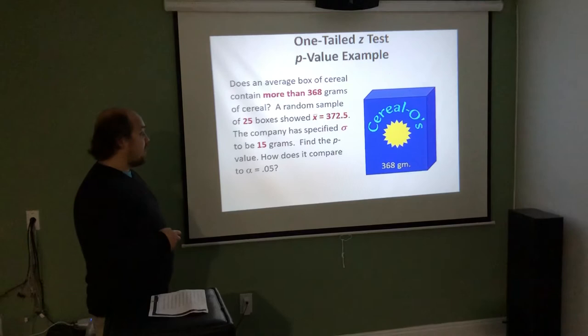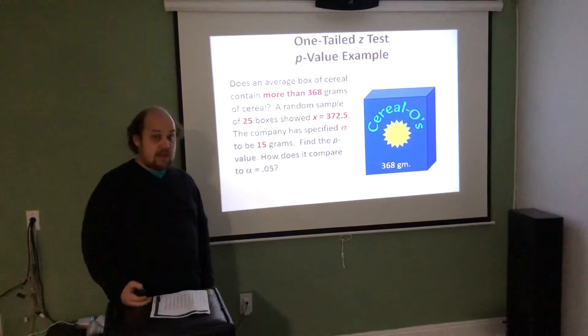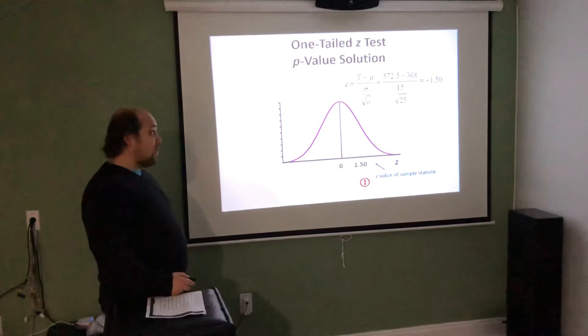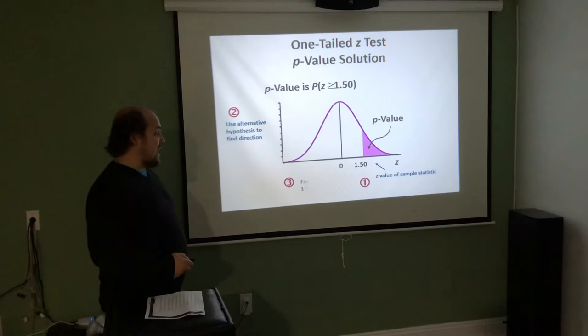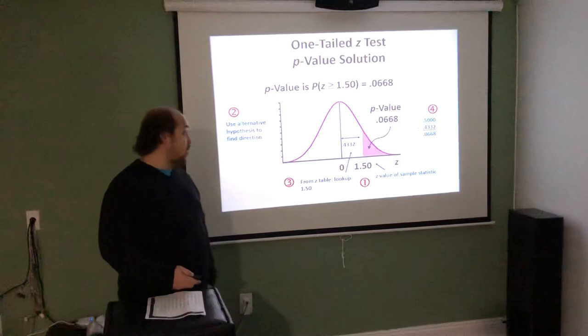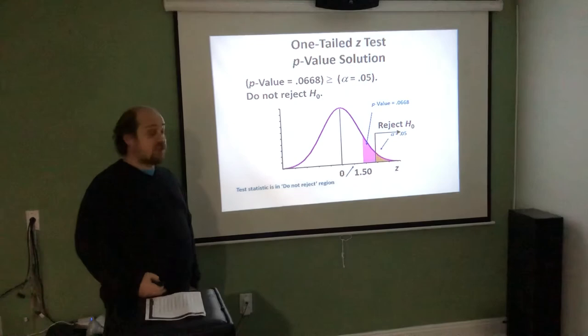For the one-tailed version of a similar problem: Ford wants to know if the average MPG of Escorts is more than 368 grams — wait, more than 365/368 grams. The entire z calculation is the same; the only difference is since it's a greater-than one-tailed test, we don't double the p-value. We get z = 1.50, look up 0.9332, and 1 − 0.9332 = 0.0668. Comparing 0.0668 to alpha = 0.05: since 0.0668 > 0.05, we still fail to reject.